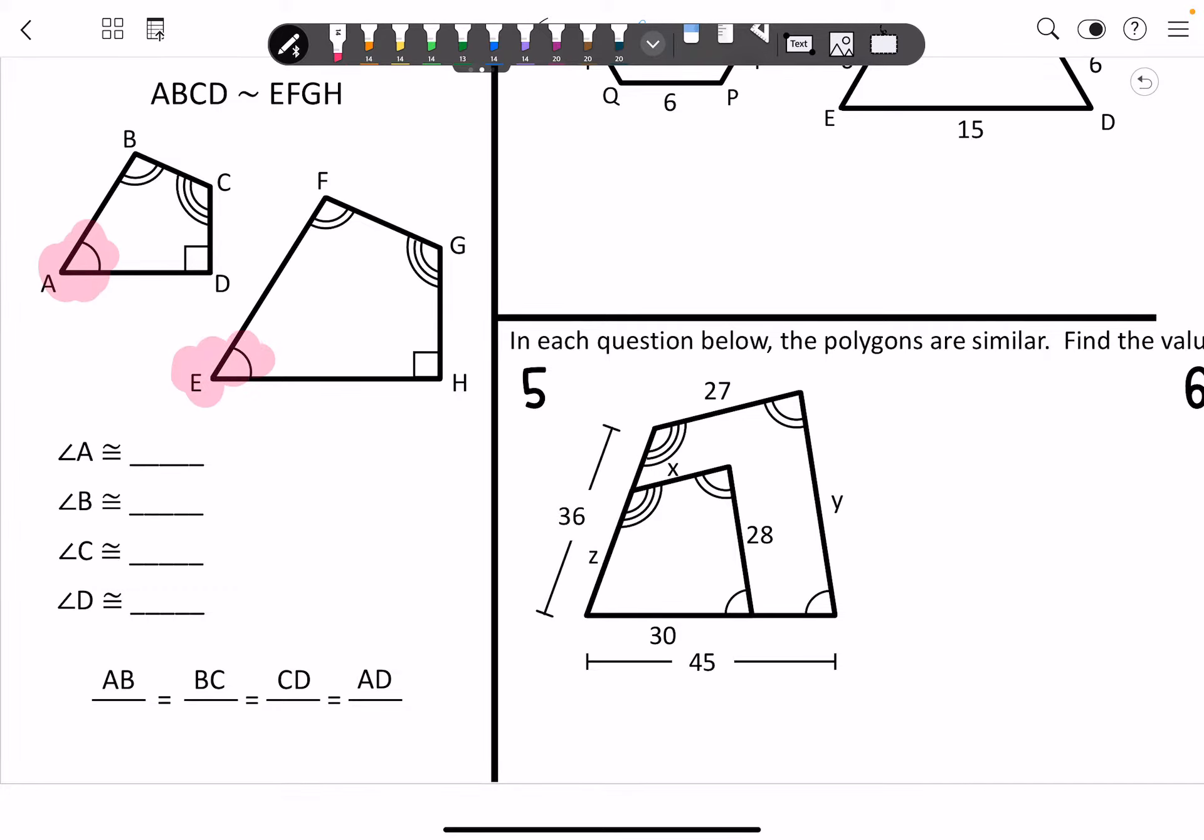I've got my A to E, I've got B to F, I've got C and G, and then I've got D and H. Alright, now again, with these statements, you can write your similarity statements.